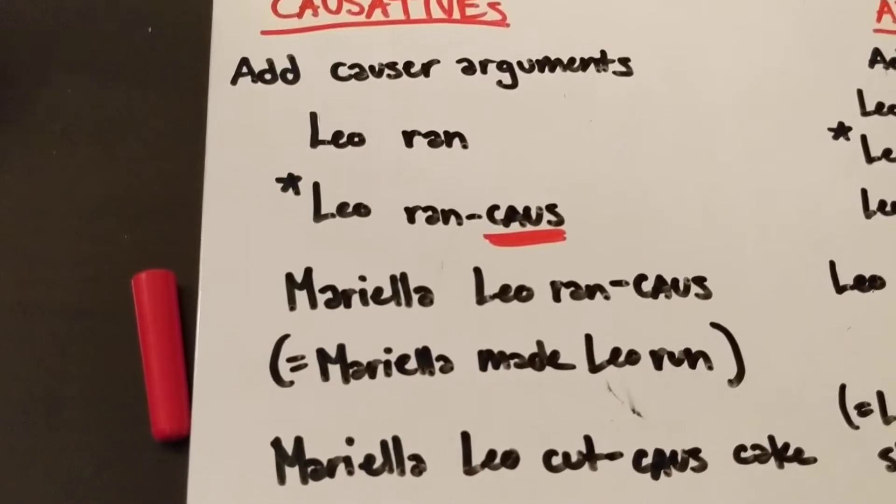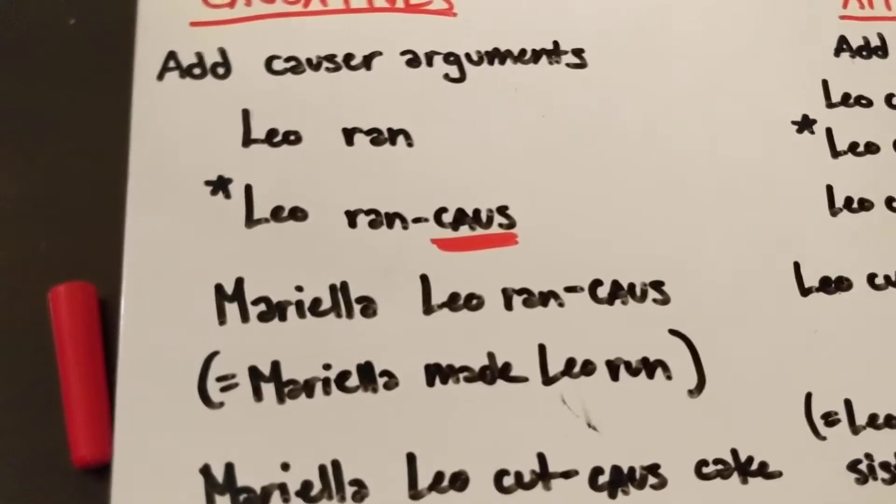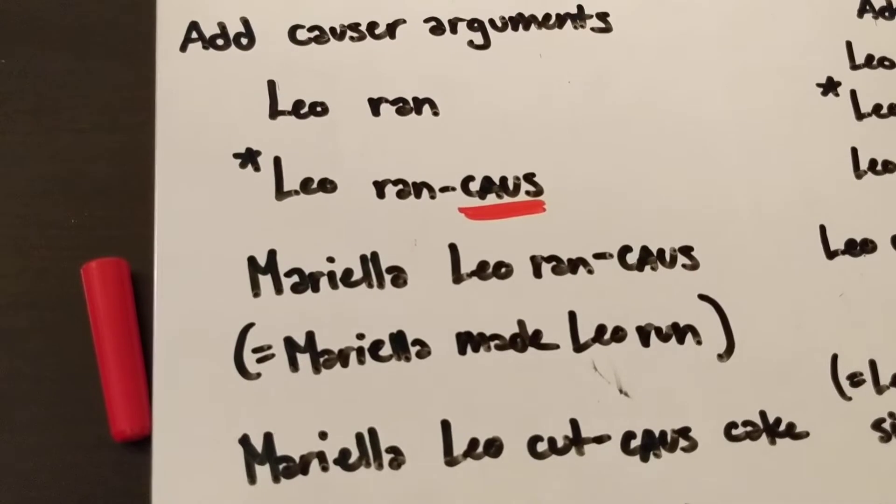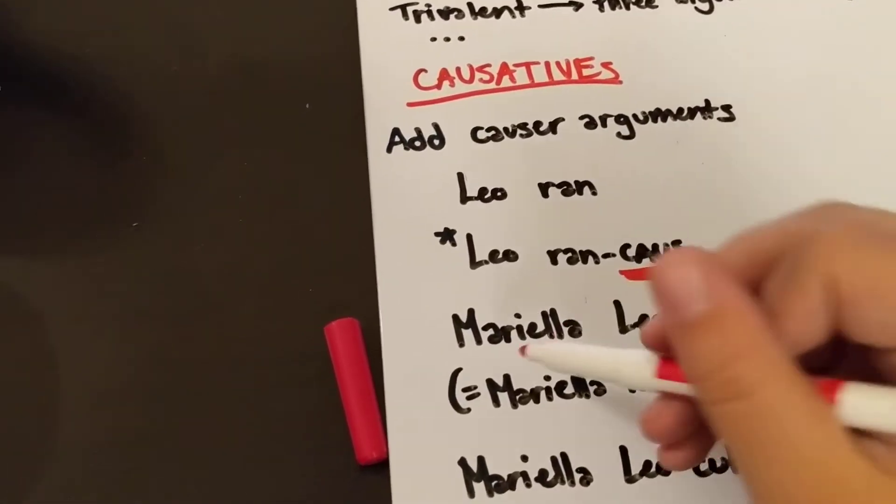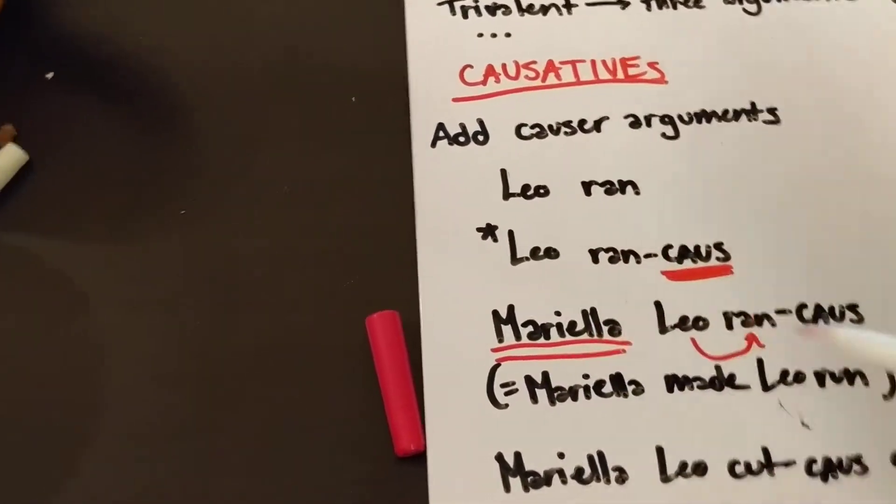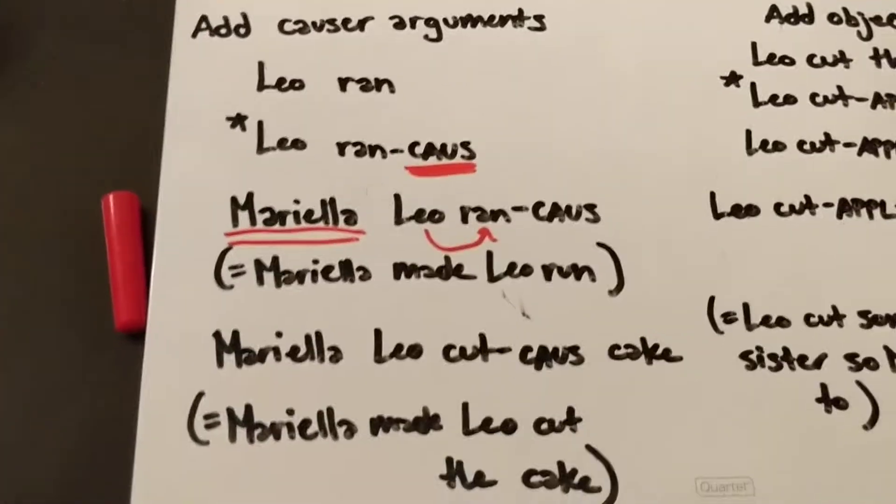So you can say Mariela Leo ran causative, right? Which means Mariela made Leo run. So Leo is still the one doing the running, but we have another argument here, Mariela, who is making that running happen.